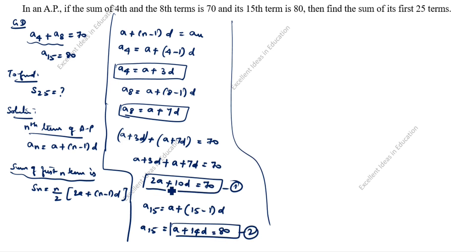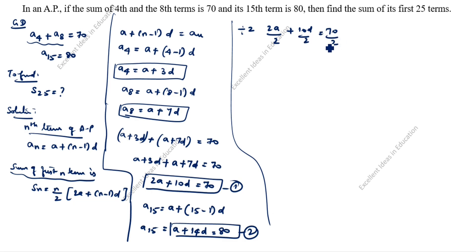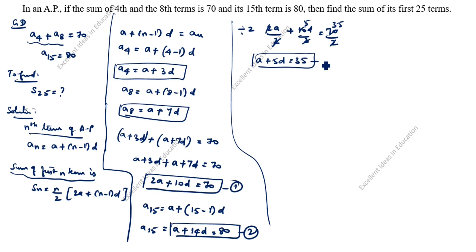Looking at the first equation, 2A plus 10D equals 70, we will simplify it by dividing by 2. So 2A divided by 2 plus 10D divided by 2 equals 70 divided by 2, which gives A plus 5D equals 35. This is the third equation.